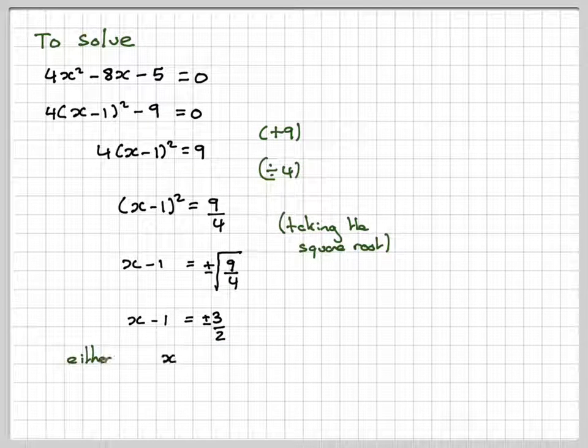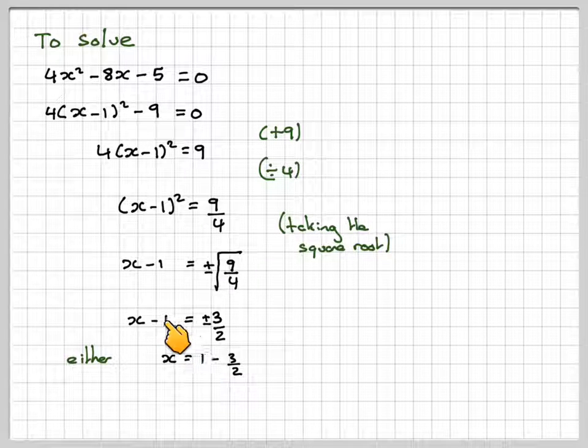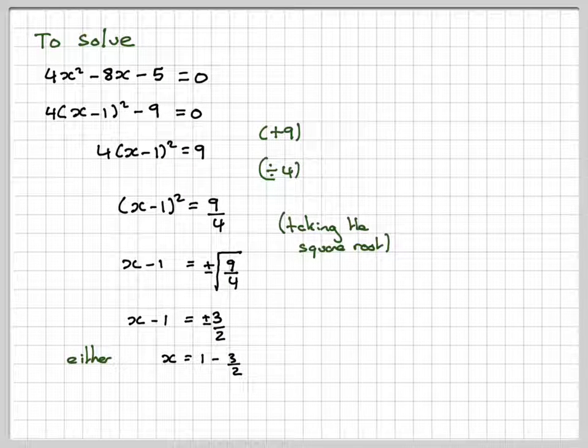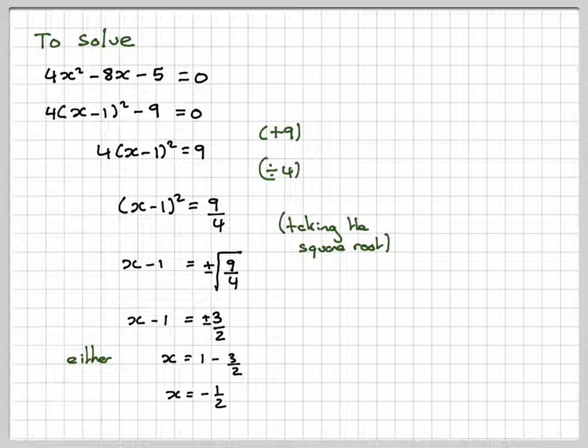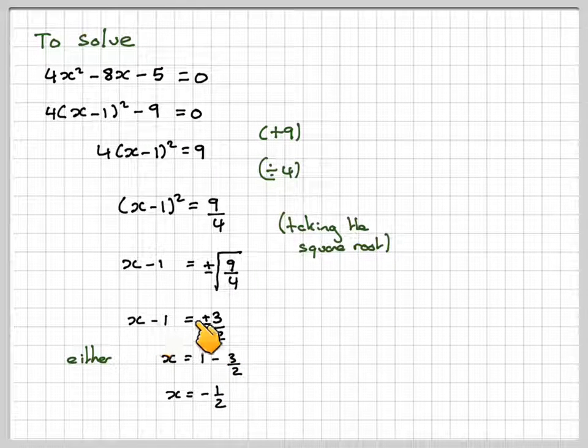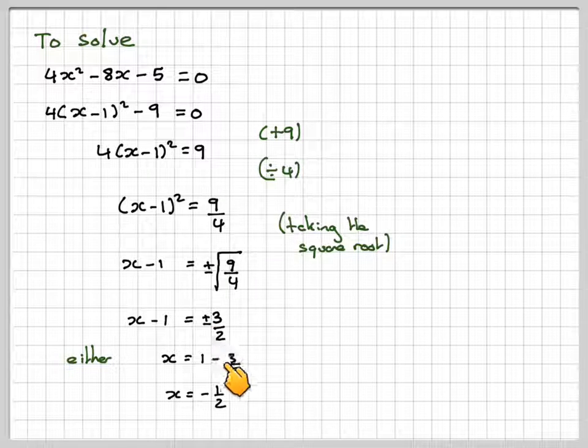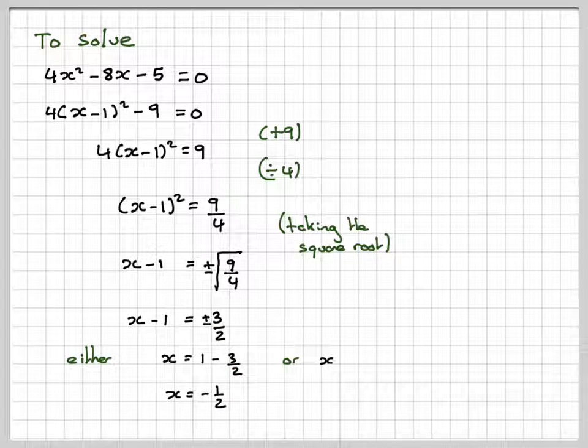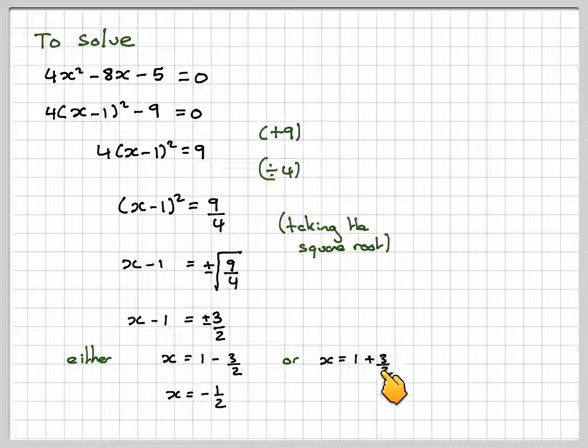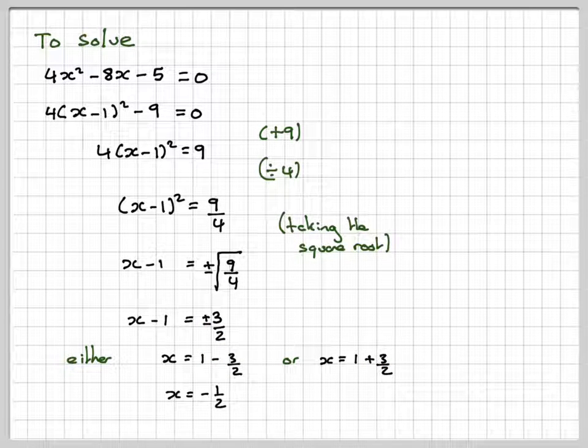So we get either x equals 1 minus 3 over 2. So taking the 1 over and then subtracting 3 over 2 from it, we get minus 1 over 2. Or x equals 1 plus 3 over 2, that's like 1 plus 1 and a half, that's 2 and a half, which is 5 over 2.